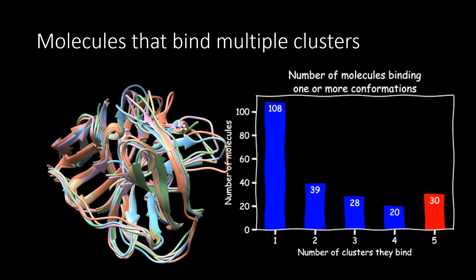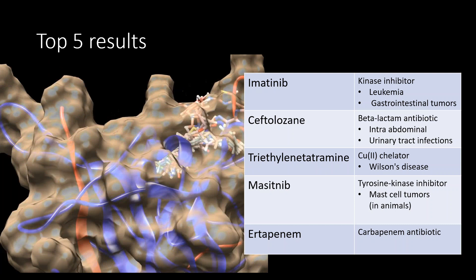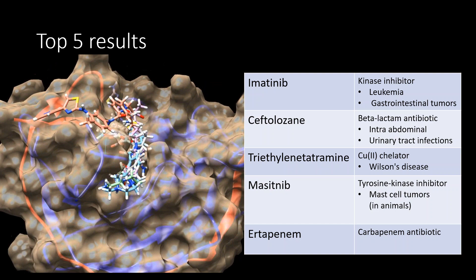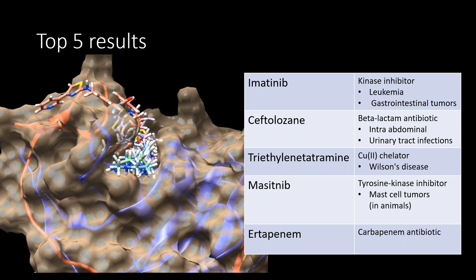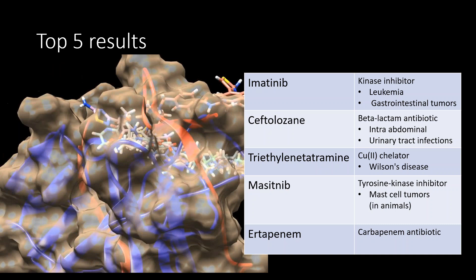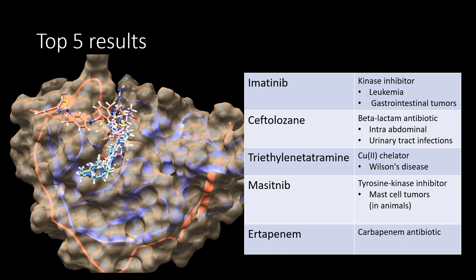We're now looking into purchasing those 30 molecules so we can test them against the virus. Just to give you an idea of the five best binders: one is a kinase inhibitor used for leukemia and gastrointestinal tumors, two of them are antibiotics, one is a chelator used in Wilson's disease, and another is a kinase inhibitor used for tumors in animals.